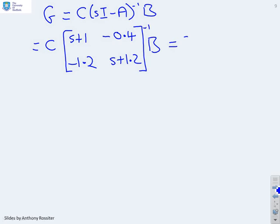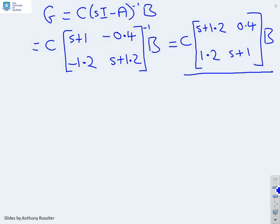And that, if we do it, you're still going to get C. I'll worry about what C is in a bit. And then square brackets, we're going to get S plus 1.2, 0.4, 1.2, S plus 1, all into B.